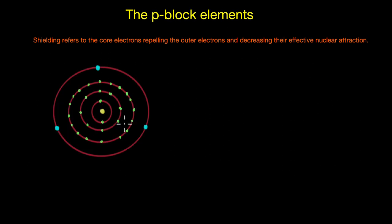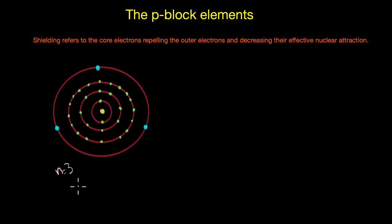Going back to the example of three valence electrons in the fourth shell: the innermost shell electrons shield them most, followed by the second shell, and then the third shell. Within the third shell, electrons in 3s orbitals shield the most, followed by 3p, and least by the 3d electrons. The consequence of the poor shielding by d and f orbitals is that the valence electrons experience greater effective nuclear charge.